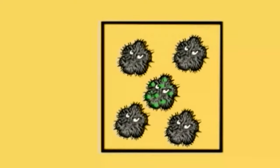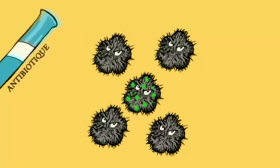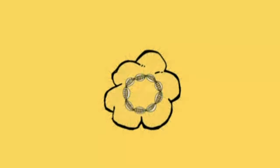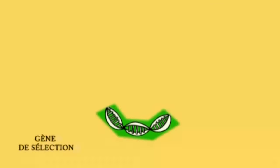Le deuxième gène vient d'une autre bactérie qui vit dans notre intestin et qui résiste aux antibiotiques. C'est le gène de sélection.